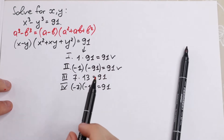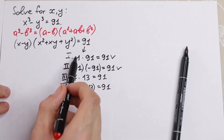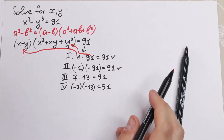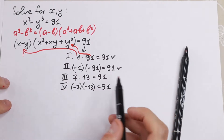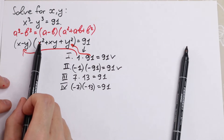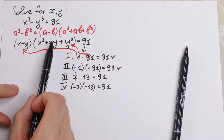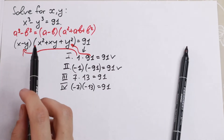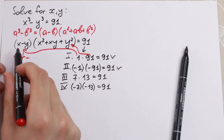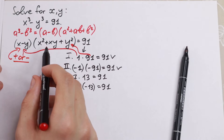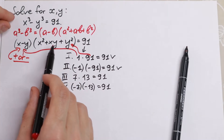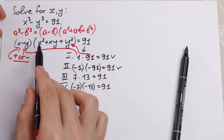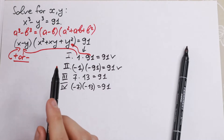We can solve a system of equations by assigning each factor to one of our parentheses. Notice that the second parenthesis, x squared plus xy plus y squared, is always positive. So x minus y can be positive or negative, but the second factor is always positive. This eliminates two of our four cases, leaving only two valid ones.